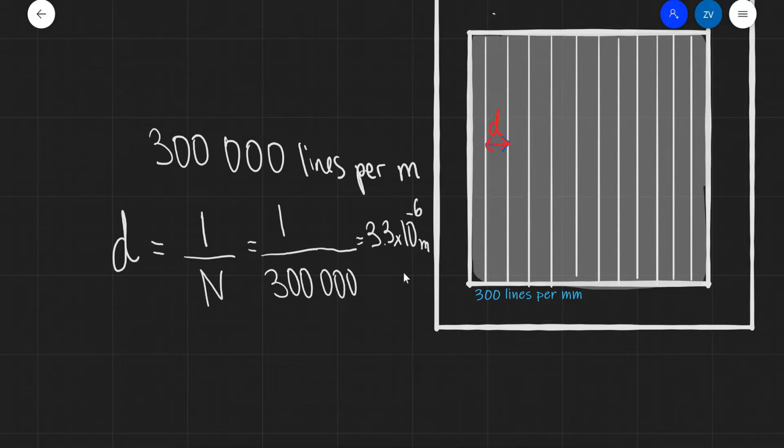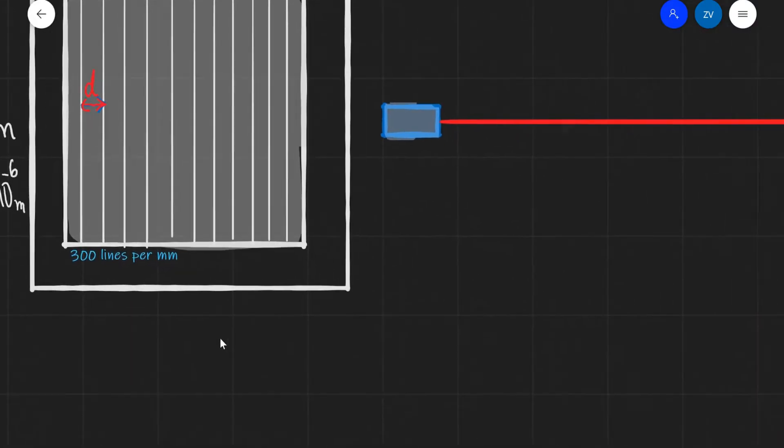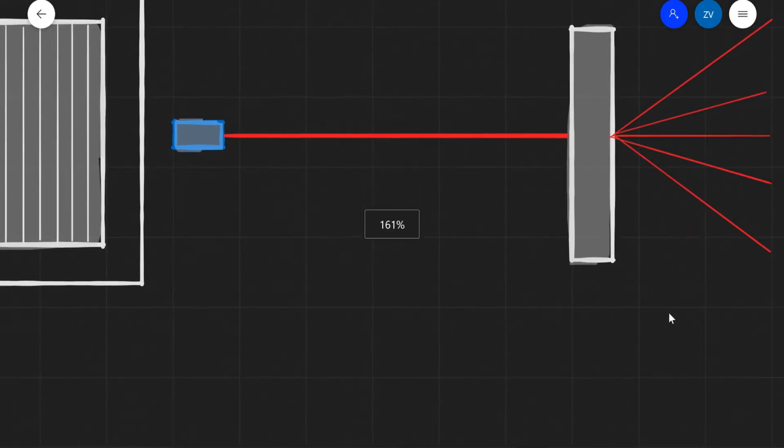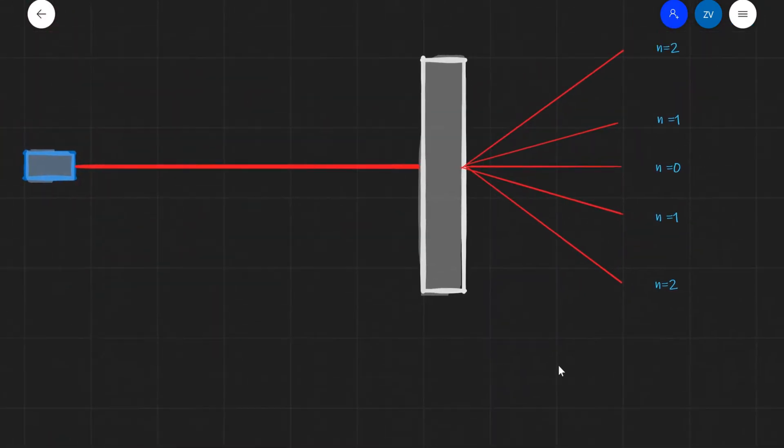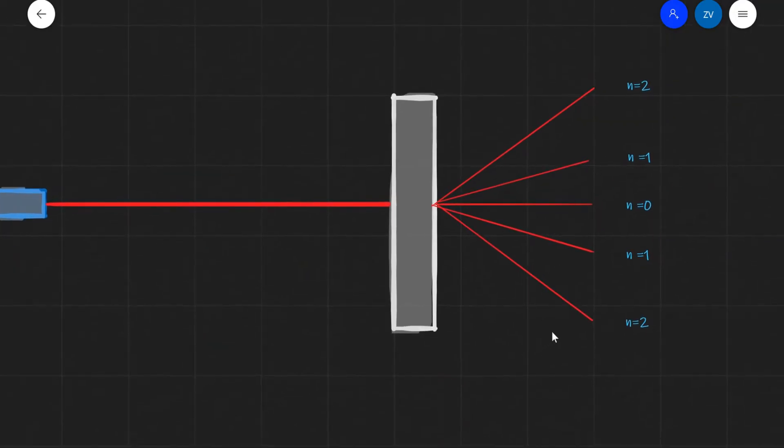Let's see why this distance is important. Imagine we're looking at the same diffraction grating from the side. We have a laser shooting red light through the grating, and we can see the light spreading.